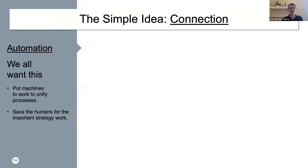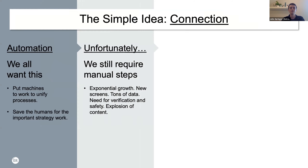I think it's safe to say that we all strive for this, especially everyone here at this conference. Putting machines to work where human strategy isn't needed should be the ultimate goal. But unfortunately, this isn't always the case. As much as programmatic AI and automation are the promise of this industry, there are so many areas that require manual steps — emails, spreadsheets, FTP transfers.